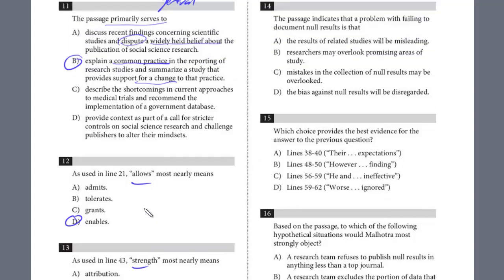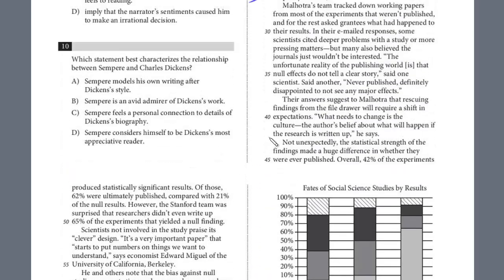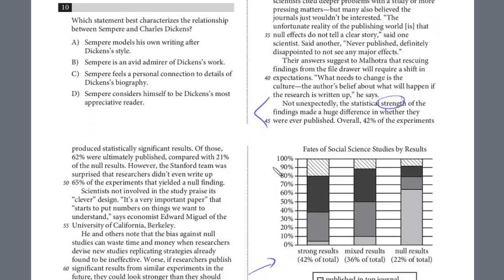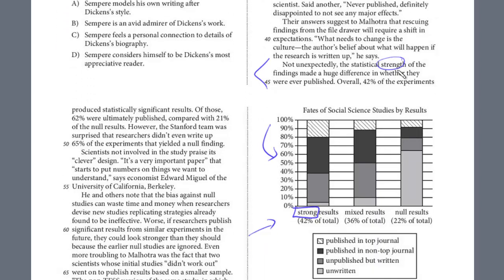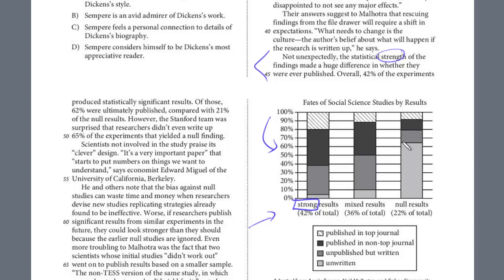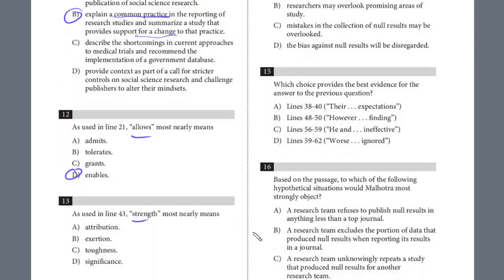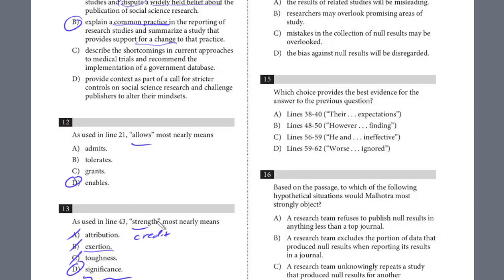Now let's take a look and see what strength means in line 43. Again, we're going to try to predict it. Not unexpectedly, the statistical strength of the findings made a huge difference in whether they were ever published. This relates to the graph as well. The strength of the findings, that's really how closely related they were to the hypothesis, how strong the results are, how important. It's hard to predict this one, but I think you know what word you're looking for. Attribution—to attribute means to give credit. This is not giving credit. The strength of the data is really how strong it is. It's not exertion, which is sort of like physical exertion to expend energy. It's not toughness. It's significance, right? How significant the data is, how strong it is, how accurate it is. So it's D for that one.